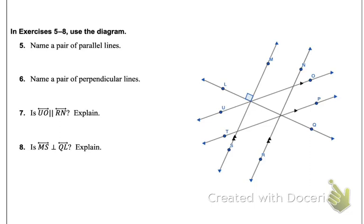On this last set of examples, we have name a pair of parallel lines. So those symbols there show that those are parallel. So to name those lines, we're just going to use the two letters. So we have line MS is parallel to RN. And then we also have line OP. Those two lines are marked parallel with their arrows. And so we've got line UO and line TP.